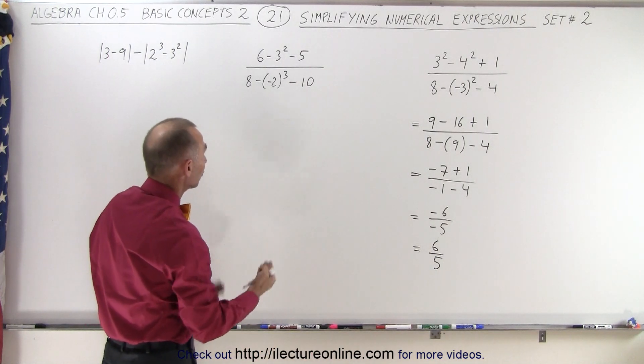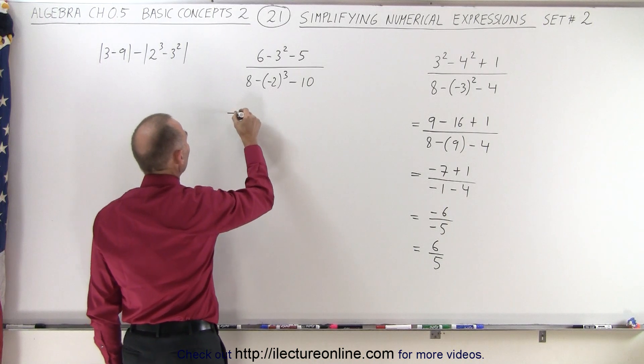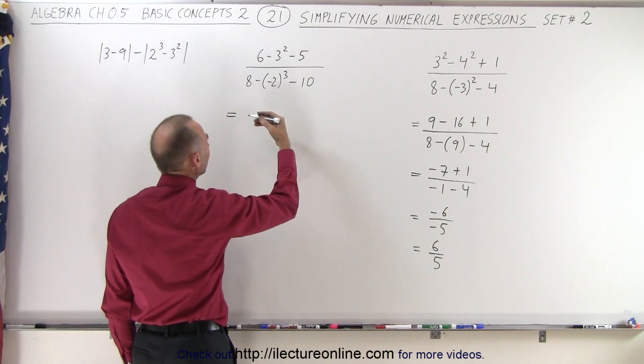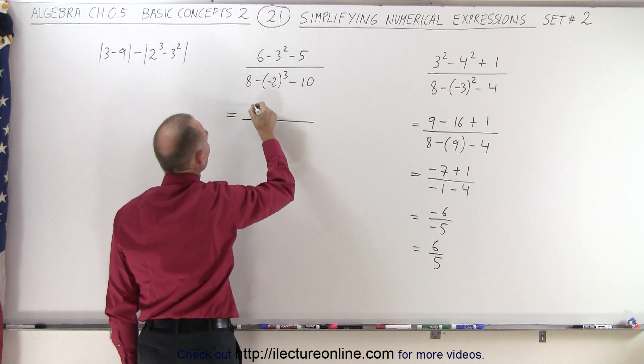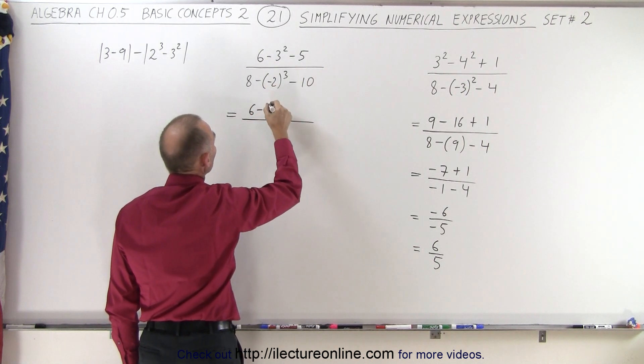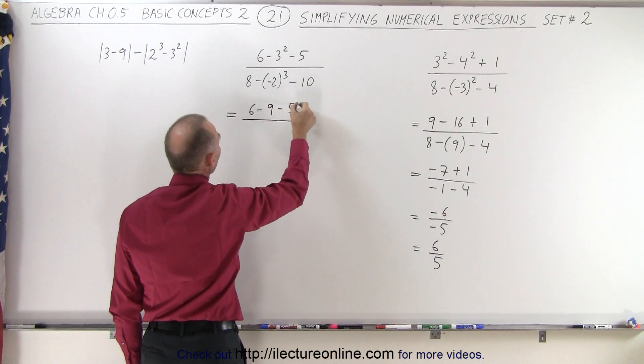Over here, we're going to approach it the same way. We're going to simplify the numerator and the denominator separately. So first, we simplify the numerator by starting with the exponent. So we have 6 minus 3 squared, which is 9 minus 5.